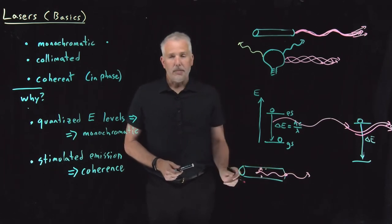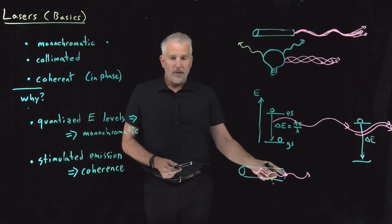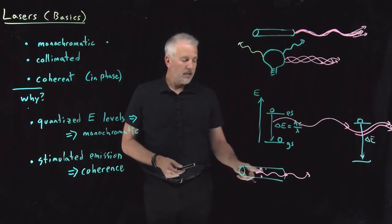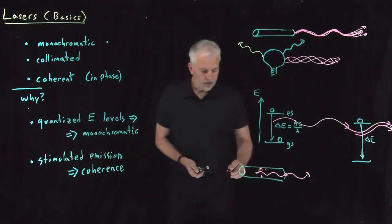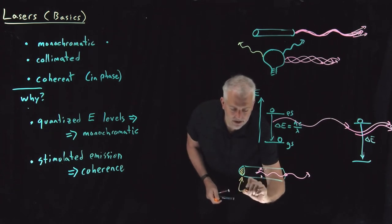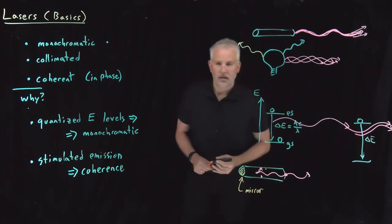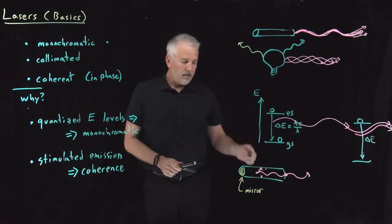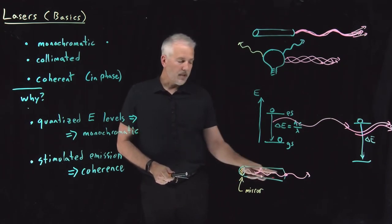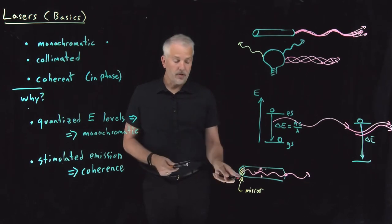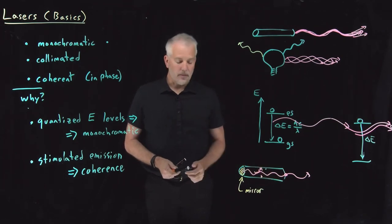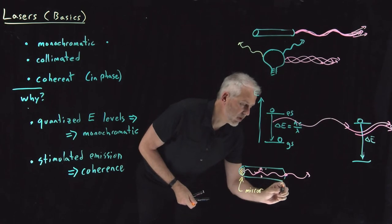We can do much better than a simple cylinder. If we put a mirror on the back end, photons emitted backward reflect off the mirror and proceed out the front side, effectively doubling the length of the cylinder. That gives a little extra collimation. We can do even better than that.